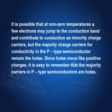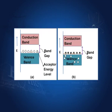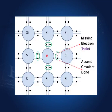The majority charge carriers for conductivity in the p-type semiconductor remain the holes. The holes move because electrons move — therefore holes move in the opposite direction. So in p-type semiconductors, the conduction is caused by holes. For example, an electron moves here, a hole is created; it moves again, a hole is created elsewhere. The holes can move and they cause the conduction in p-type semiconductors.